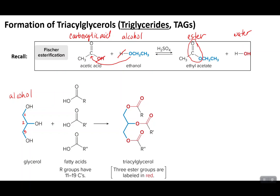Then we have the other group called fatty acids. What fatty acids all have in common is that they contain a carboxylic acid group, bound to an R group that contains many carbon-carbon and carbon-hydrogen bonds. Fatty acids have the word 'acid' in them because of that carboxylic acid functional group. The OH will leave, the H will leave to form water, and then the oxygen from the alcohol bonds to the carbonyl carbon — forming the ester.